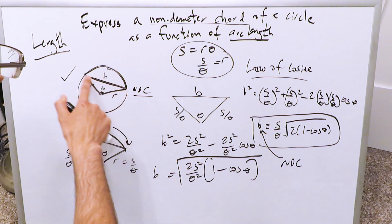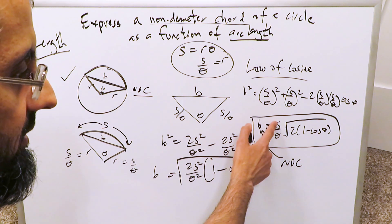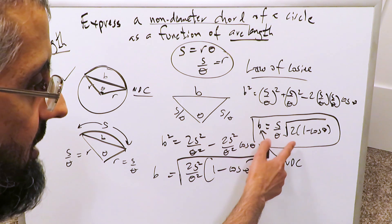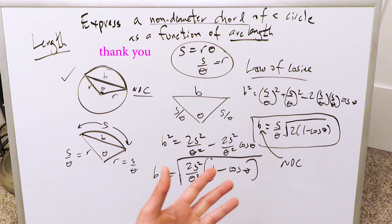A non-diameter chord will always have a dimension B, and that dimension B will always equal to S over theta, your arc length divided by the angle theta, multiplied by the square root of 2 times 1 minus cosine theta, and you can close that parentheses, and that right there is your answer.